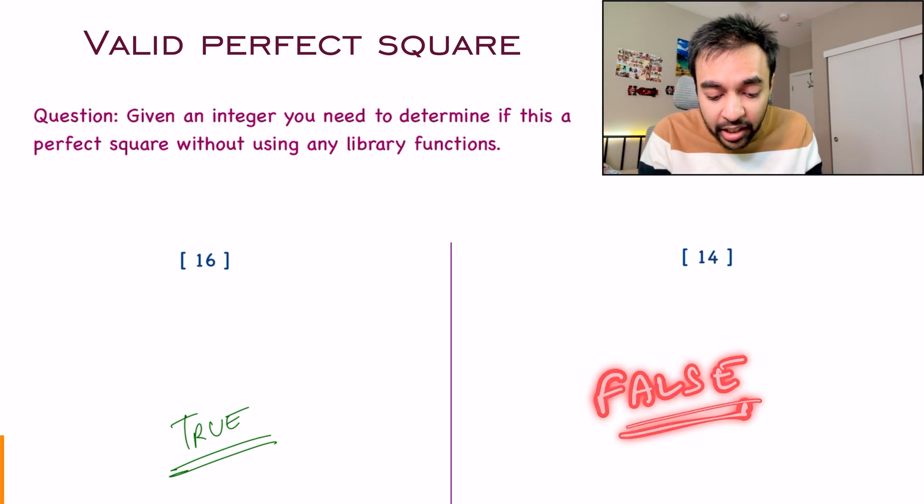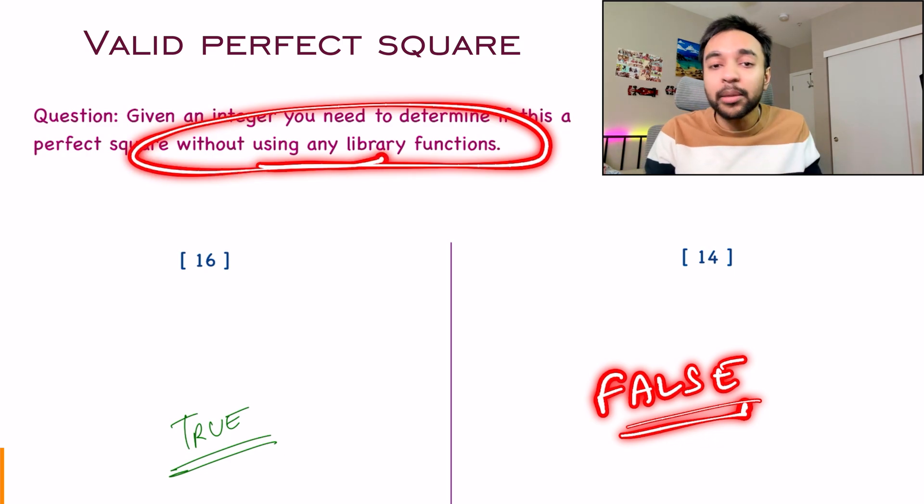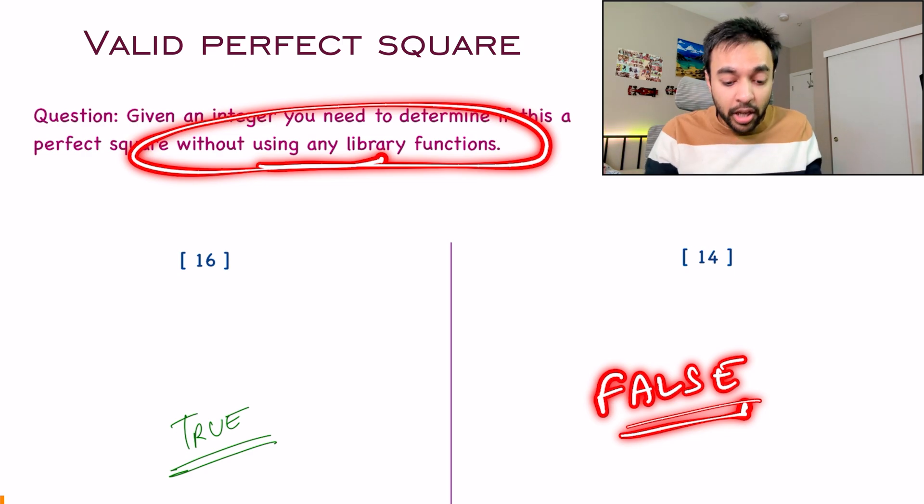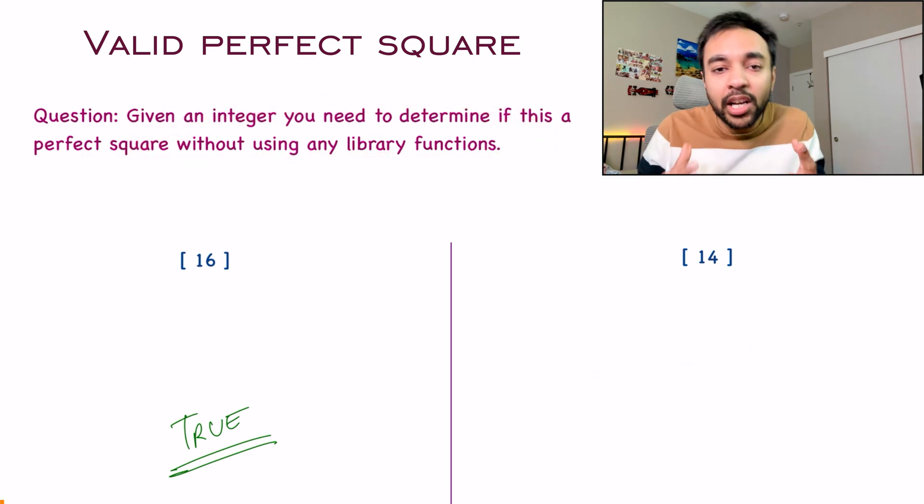The catch over here is that you don't have to use any of the library functions. Every language has some. Java has math.sqrt. In Python, you can directly use sqrt. Similarly, in every other language. But you don't have to do it. So how can you come up with an approach to it?